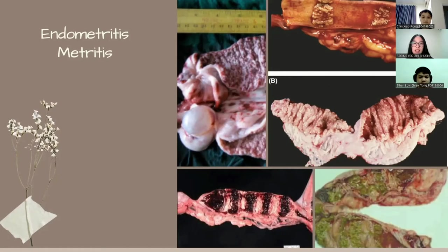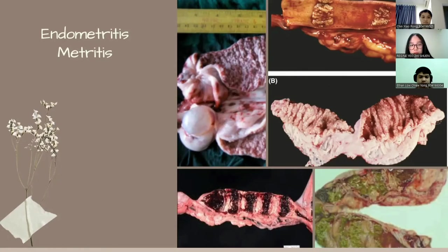E. coli is the most common bacteria isolated from an impacted uterus. Streptococci, staphylococci, Proteus species, and others are isolated less frequently. This is a short description about endometritis and metritis. Do you guys have any questions?